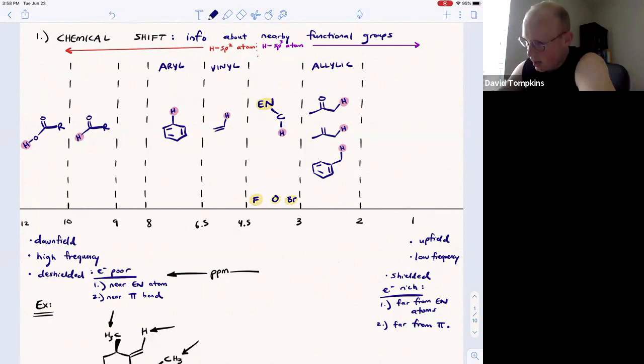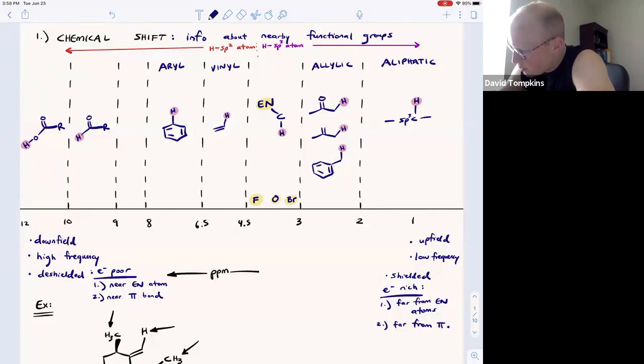Finally, we have the aliphatic region, which just means typical sp3 carbons that have a proton of interest. That proton will show up usually between zero and 1.5, assuming that is only flanked by other sp3 carbons and there are no pi bonds or electronegative atoms that are close by. One thing I do want you to know in this region is that if you have more protons, such as a methyl group on a carbon, it will be more shielded or at lower chemical shift than if you have fewer protons. Like a CH2, methylene would be further downfield slightly than methyl, and methine (CH) is the most downfield of that series.